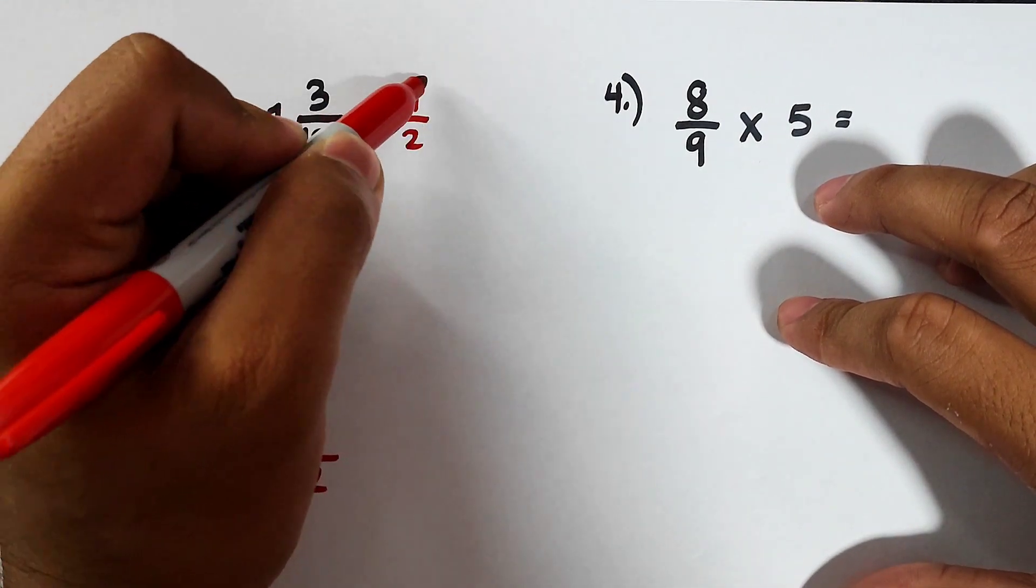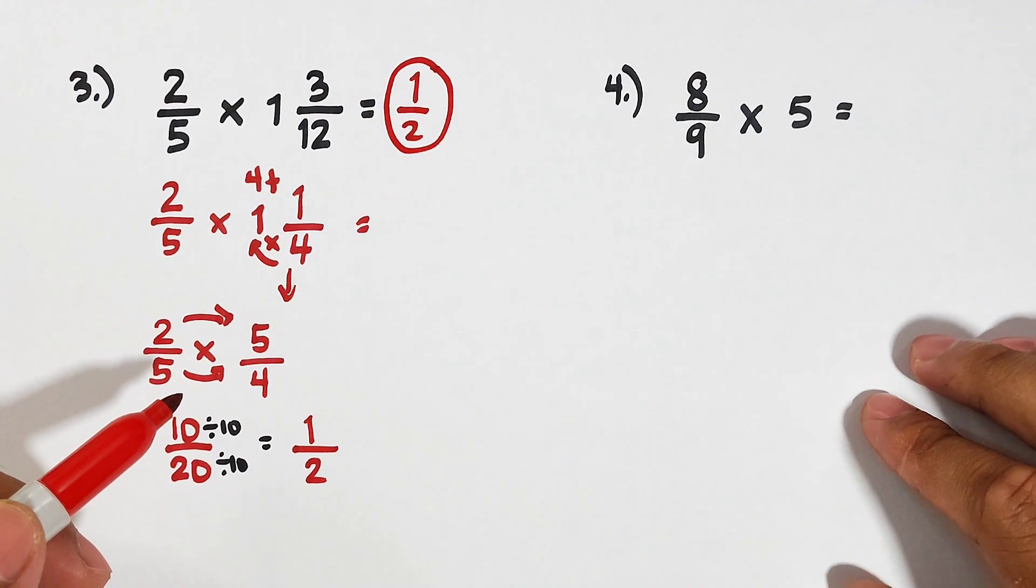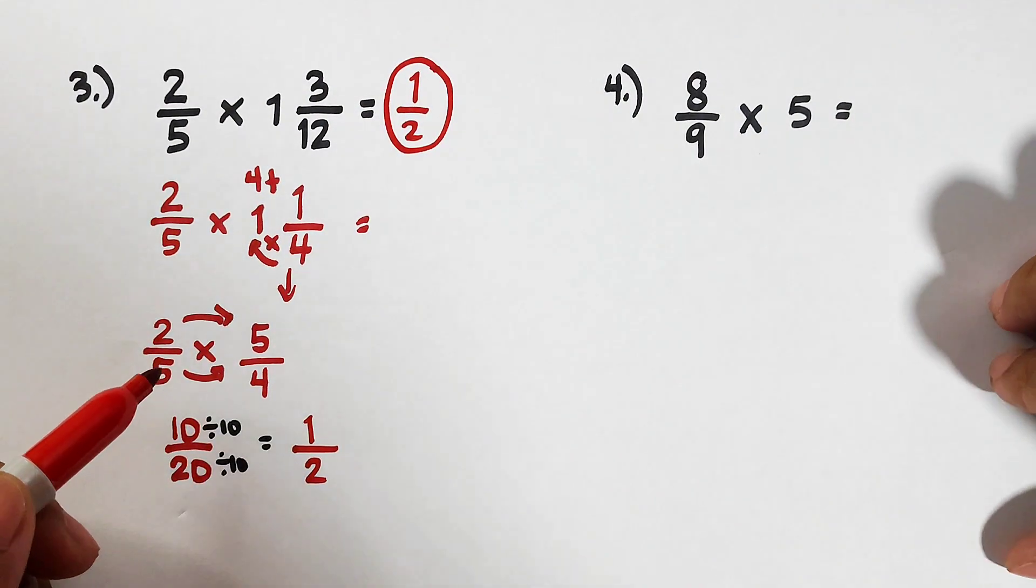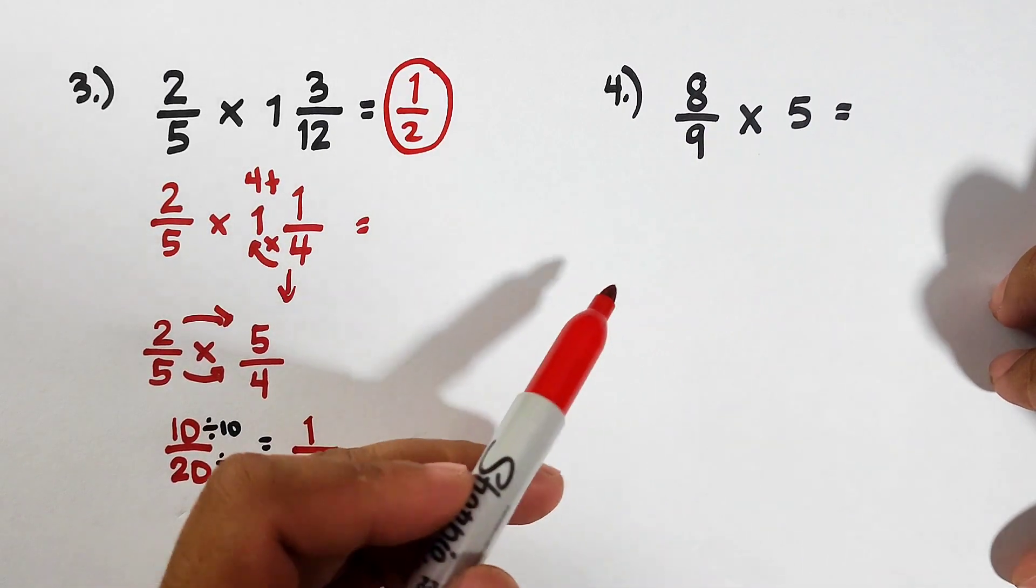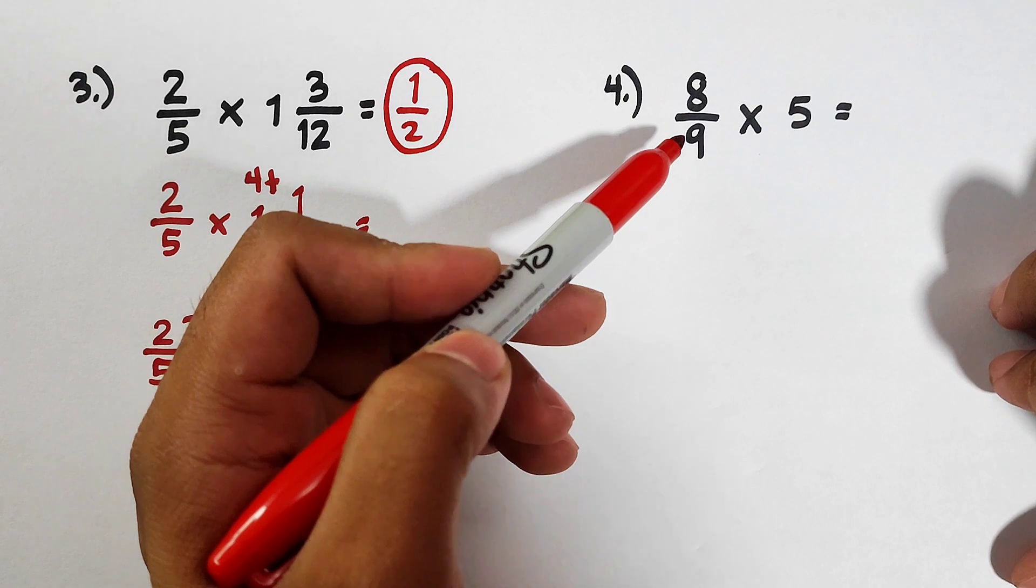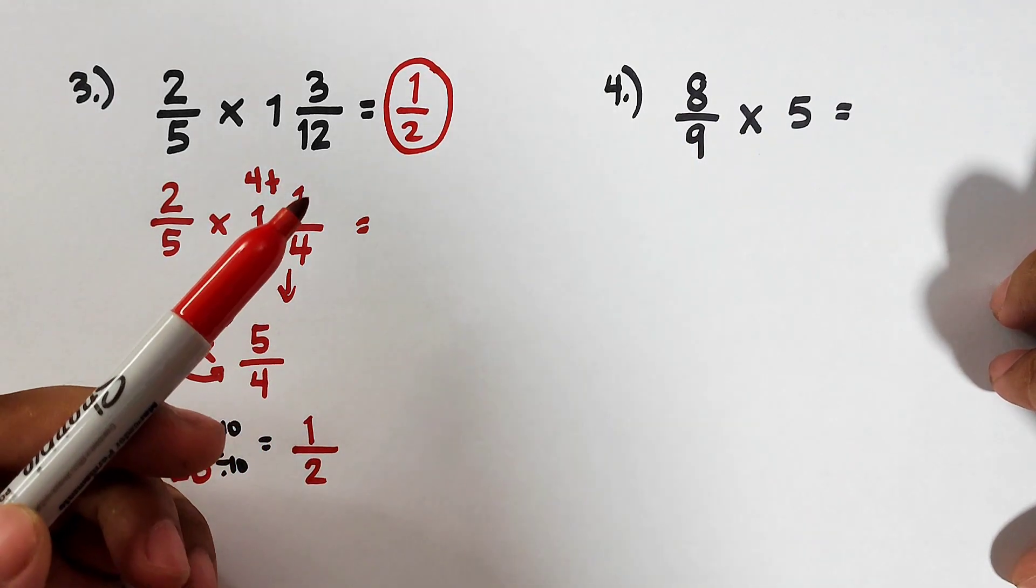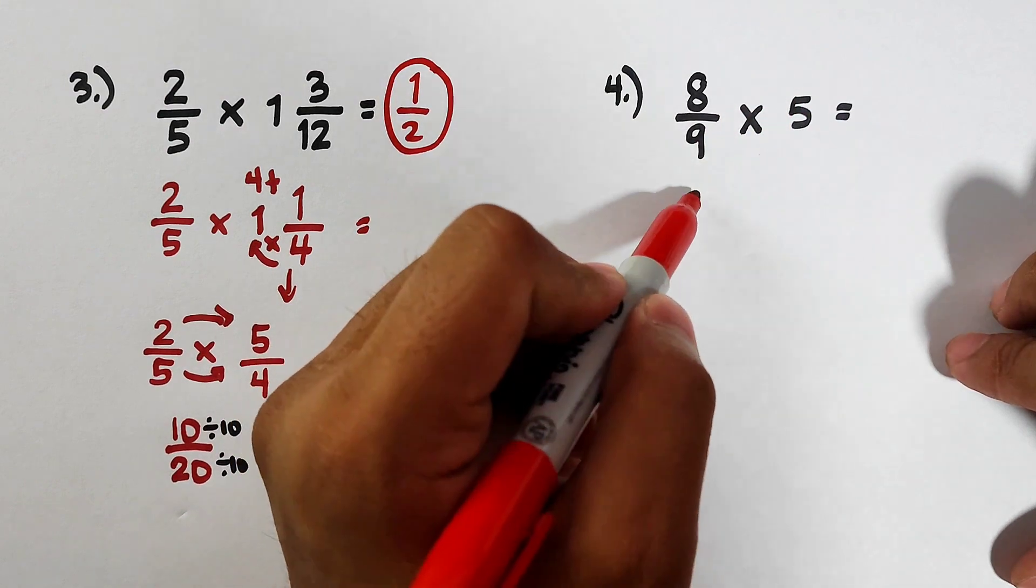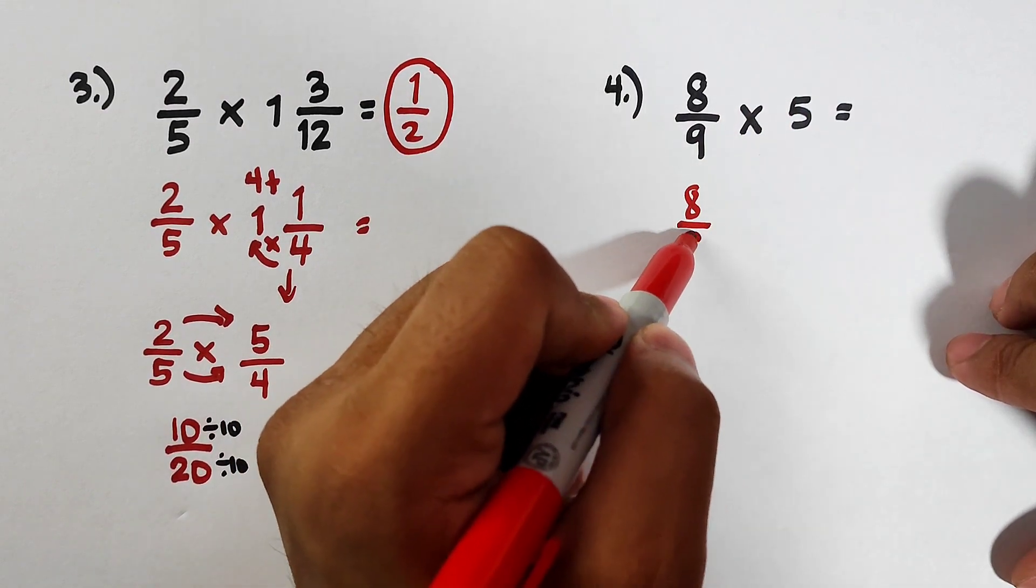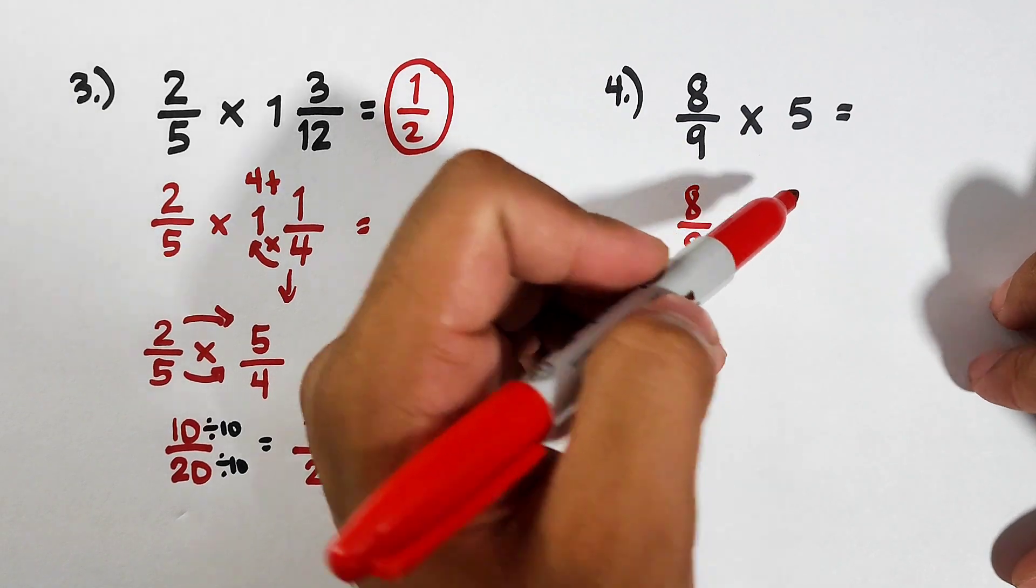And this is the answer, guys. Now let's move on with item number four: 8/9 times 5. Here the situation is you will multiply a fraction by a whole number.